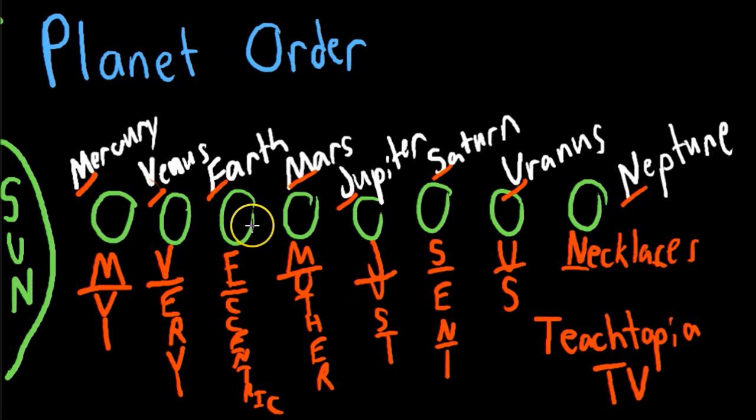Now, how do you memorize that? How do you memorize Mercury, Venus, Earth, Mars, Jupiter, Saturn, Uranus, Neptune? You simply remember the phrase: my very eccentric mother just sent us necklaces.